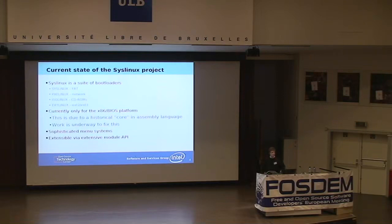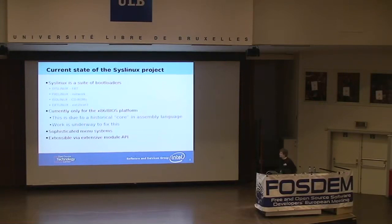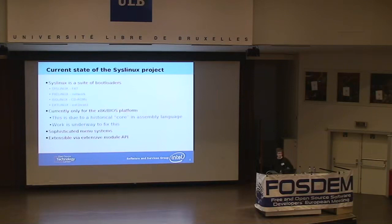Following that came network booting in PXE Linux. This is named after the PXE standard, which is the standard for network booting on x86. After that was ISOLinux, which boots from CD-ROMs — from the ISO 9660 file system. And most recently, extlinux, as a general-purpose bootloader, loads from Linux ext2 and ext3 file systems.